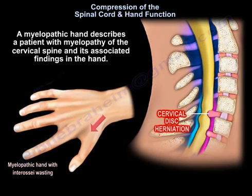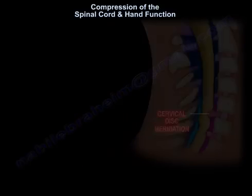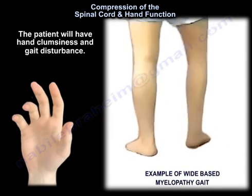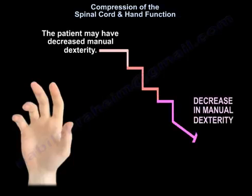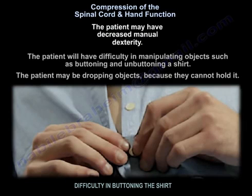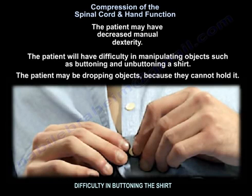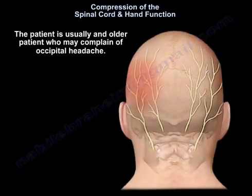A myelopathic hand describes a patient with myelopathy of the cervical spine and its associated findings in the hand. The patient will have hand clumsiness and gait disturbance, decreased manual dexterity, difficulty manipulating objects, buttoning and unbuttoning a shirt, and may be dropping objects because they can't hold them. The patient is usually older and may complain of occipital headache.